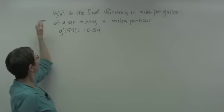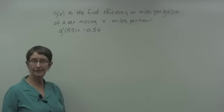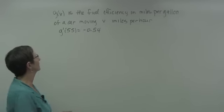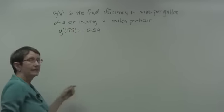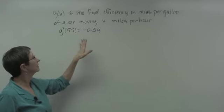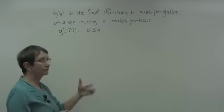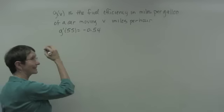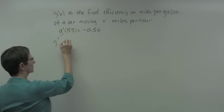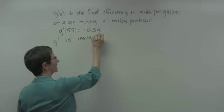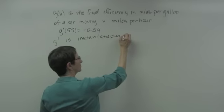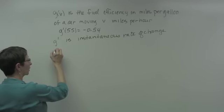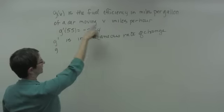In this example, g of v is the fuel efficiency in miles per gallon of a car moving v miles per hour. If g prime of 55 equals negative 0.54, let's interpret what that's really telling us. g is the fuel efficiency, so g prime is the instantaneous rate of change, and we need to think about how the units work out.